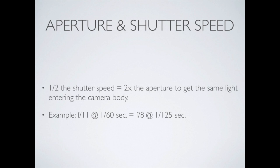Aperture and shutter speed have a relationship — they're dating. Half the shutter speed needs twice the aperture to get the same amount of light into the camera. If you have the exposure for less time — it's a fraction, that's why you've got to think through it — you need more light to get into the camera, so the aperture needs to get bigger.